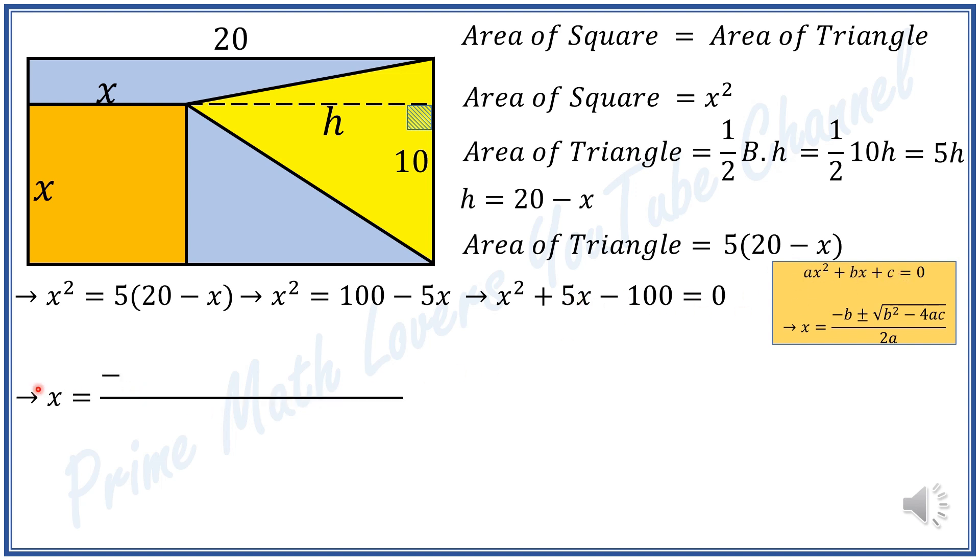So x will be equal to minus 5 plus or minus square root of 5 squared minus 4 times 1 times negative 100, over 2 times 1. This equals negative 5 plus or minus square root of 25 plus 400, divided by 2.